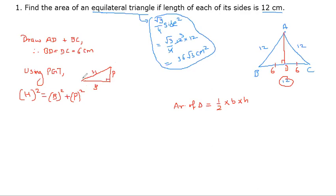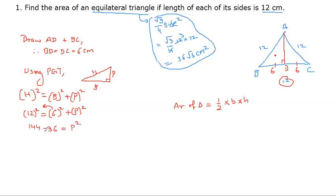So if we look at this triangle, hypotenuse is 12. So 12 squared equals base 6 squared plus perpendicular squared. 12 squared is 144, 6 squared is 36. Moving 36 to the other side: 144 minus 36 equals AD squared, which gives us 108 equals AD squared. We will now find the square root of 108 using prime factorization.